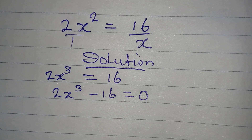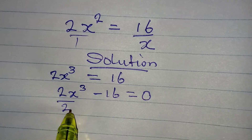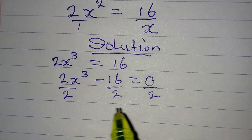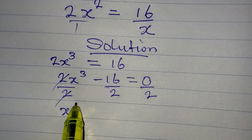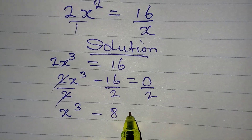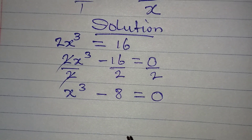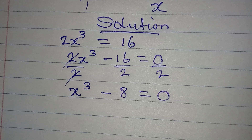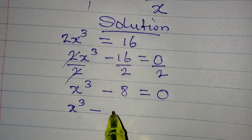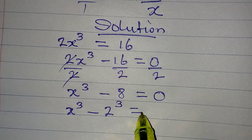By looking at this, you realize that 2 is a common factor, so we can divide through by 2. This will cancel, giving us x to the power of 3 minus 8 equals 0. From here, since we want to get three solutions, we'll rewrite 8 as 2 to the power of 3, so we have x to the power of 3 minus 2 to the power of 3 equal to 0.